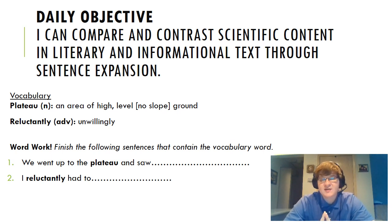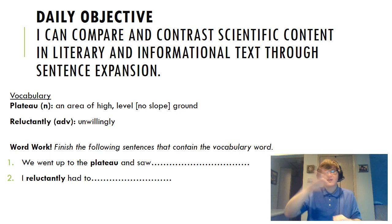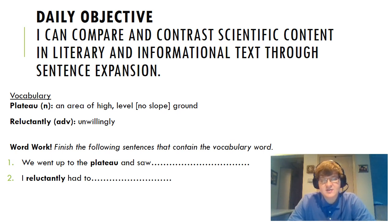We have two new vocab words today. First, a plateau is a noun — it's an area of high level ground, usually with no slope. Think of a hill that goes up and then is flat at the top, where you might be able to camp. Second, reluctantly is an adverb — remember, an adverb describes the verb. Reluctantly means unwillingly. If your friends keep pestering you to do something you're nervous about, you might reluctantly say yes. If you have to do something you don't want to, like take a test, you might reluctantly agree before going to play games.